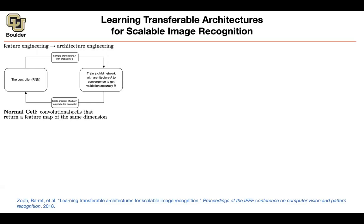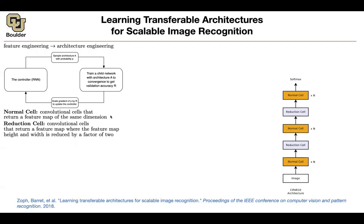Let's define what a normal cell is. A normal cell consists of a bunch of convolutions and other operations, but whatever the input resolution is, the output resolution stays the same — there is no striding, so you don't lose resolution. A reduction cell, on the other hand, reduces the height and width of the input by a factor of two. We'll train a neural network with a combination of normal cells and reduction cells on CIFAR-10: n normal cells, then a reduction, then n more normal cells, another reduction, then another normal block, then softmax.